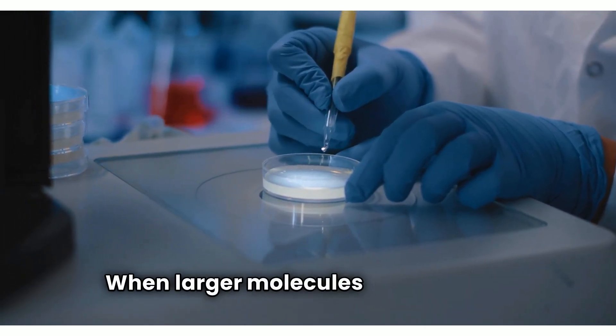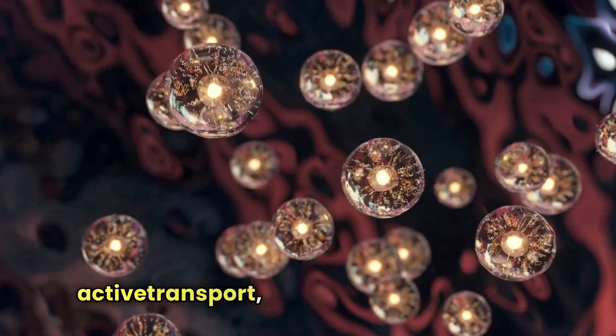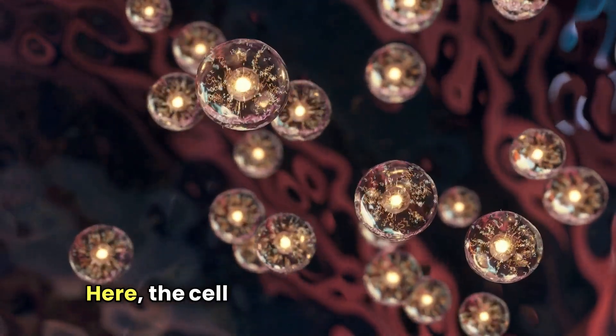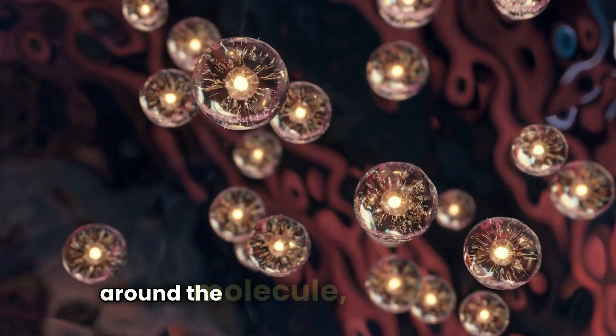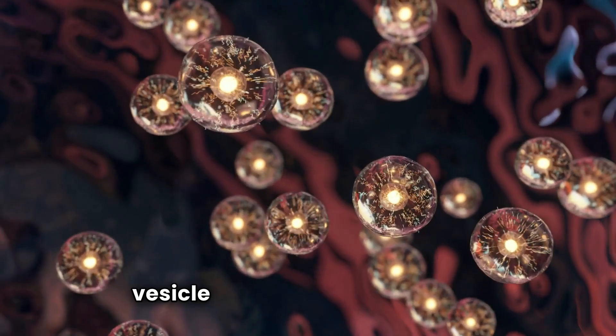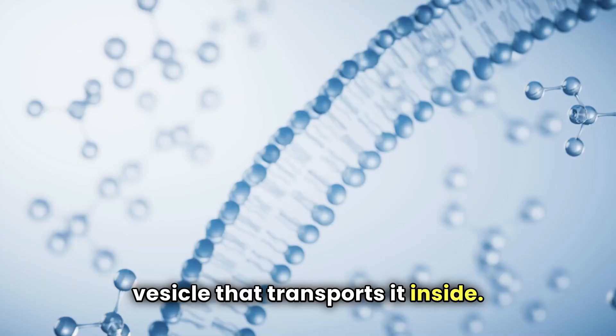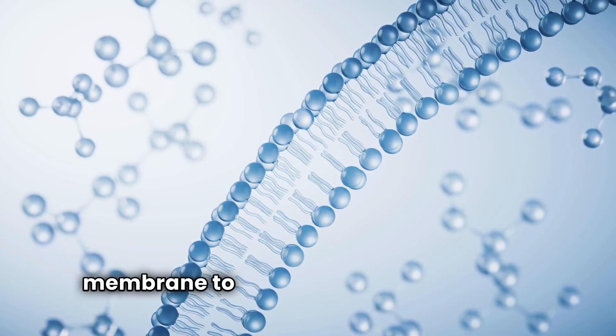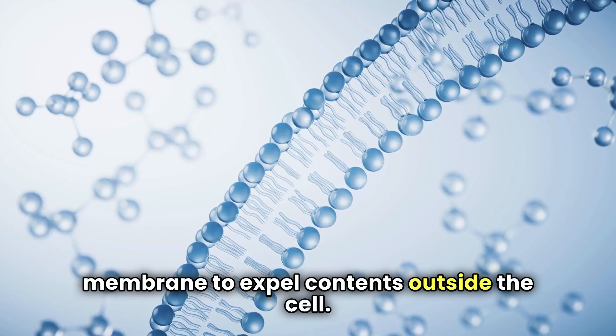When larger molecules cannot enter through active transport, cells utilize endocytosis. Here, the cell membrane forms a pocket around the molecule, enclosing it in a vesicle that transports it inside. Conversely, exocytosis involves vesicles fusing with the cell membrane to expel contents outside the cell.